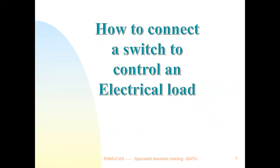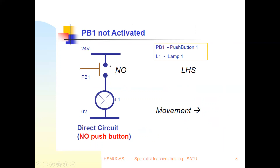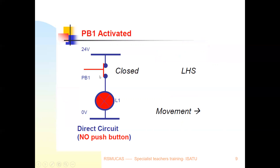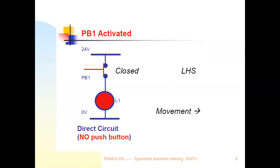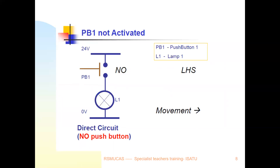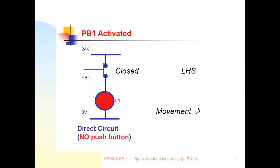Now, how do we connect a switch to control an electrical load? In the diagram, we have a normally open switch connected to a lamp powered by a 24V DC supply. The switch controls the lamp: once the switch is activated, the lamp lights up, and releasing the switch turns off the bulb. This is a simple electrical circuit showing how a bulb is controlled by a switch.